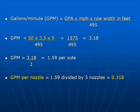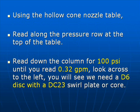Gallons per minute is equal to gallons per acre times miles per hour times row width in feet, divided by 495. So: 50 gallons per acre times 3.5 mph times 9, divided by 495 equals 3.18. Divided by 2 equals 1.59 gallons per minute per side. Divide by 5 equals 0.318 gallons per minute per nozzle.